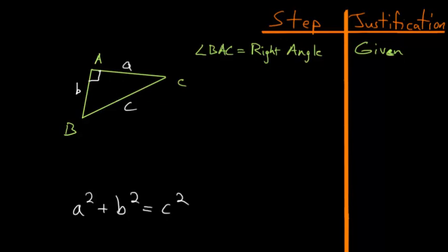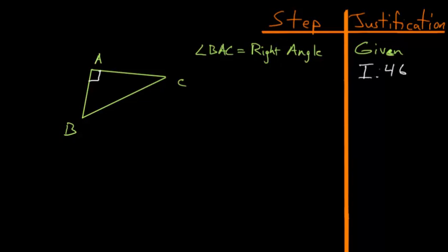With that in mind, we're going to prove that if we draw a square on this side and add it to the square drawn on this side, it would equal the square drawn on this side. To start this proof, let's construct a square on each side of this triangle, which we can do because of Book 1, Proposition number 46. So we're constructing a square on BC, a square on AC, and a square on AB.